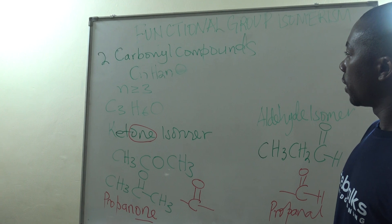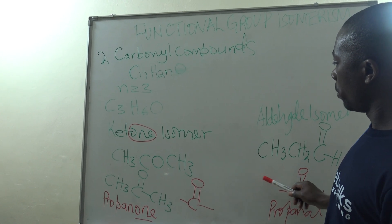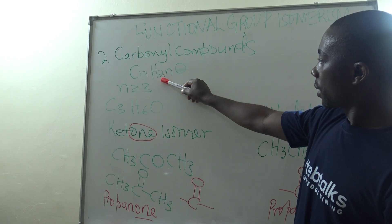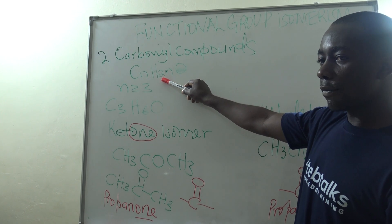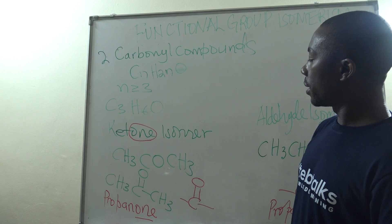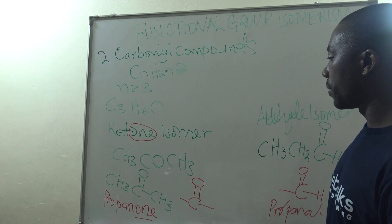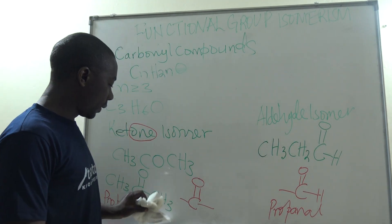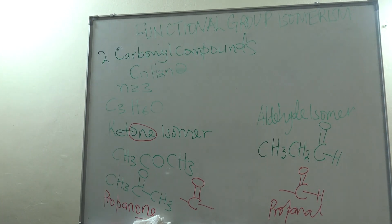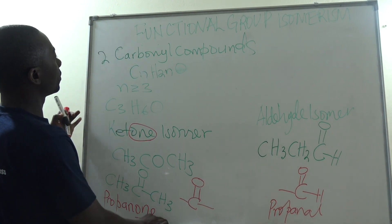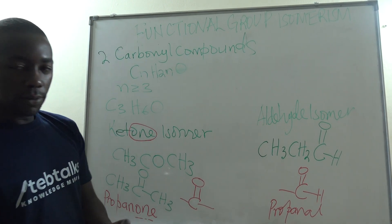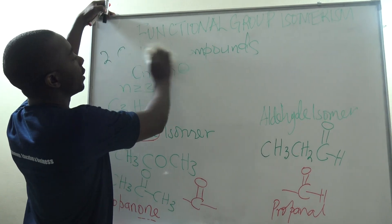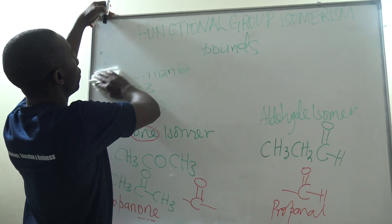That is really functional group isomerism. Both compounds conform to the same molecular formula, but they form different isomers due to a change in their functional groups. That is what we are calling functional group isomerism. We can now proceed to look at another example of how compounds can exhibit functional group isomerism.